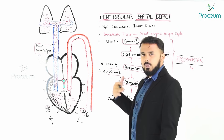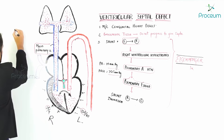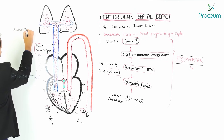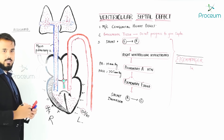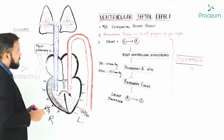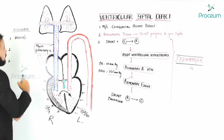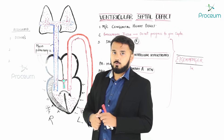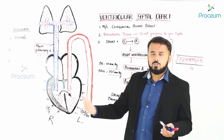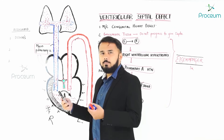People with ventricular septal defect are most commonly associated with certain genetic conditions. The first is Down syndrome, which is trisomy of the 21st chromosome pair. Patients with Down syndrome are most commonly seen to also have ventricular septal defect — they are frequently associated, though not in 100% of patients.